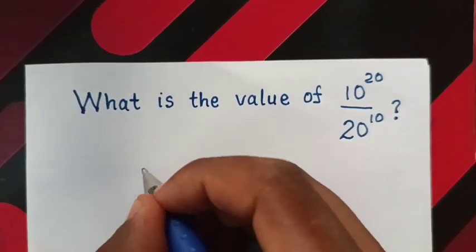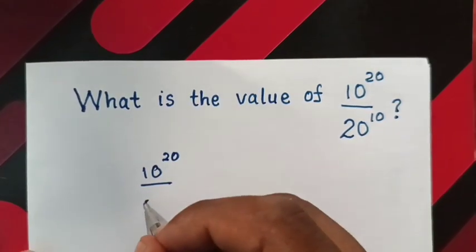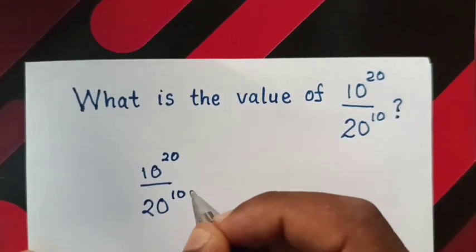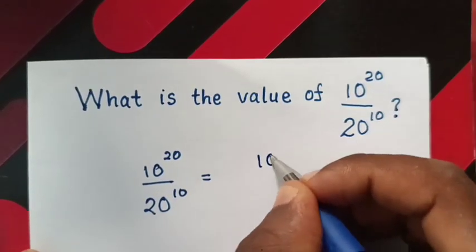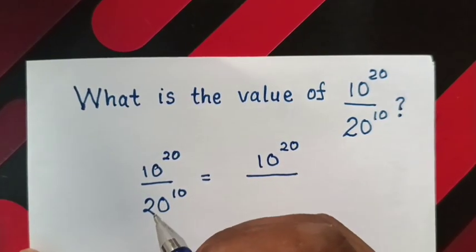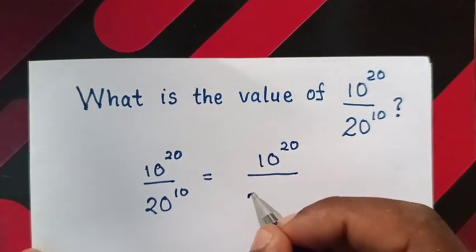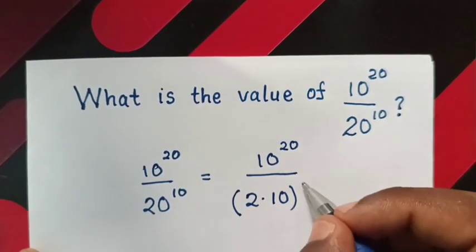So 10 power 20 over 20 power 10 is equal to 10 power 20 over, this 20 is same as 2 times 10, so 2 times 10 bracket power of 10.